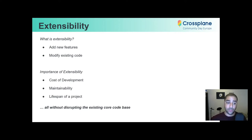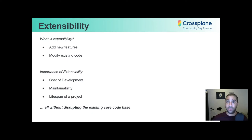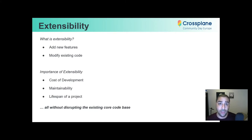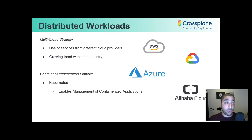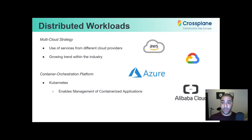The importance of this comes in many different facets. The first is cost of development. Studies show that as projects grow larger, they tend to cost more per line of code as they grow in size. So the extensibility that Crossplane buys us in our particular use case, which is to distribute workloads, is that it really helps us stand up resources on the different clouds.